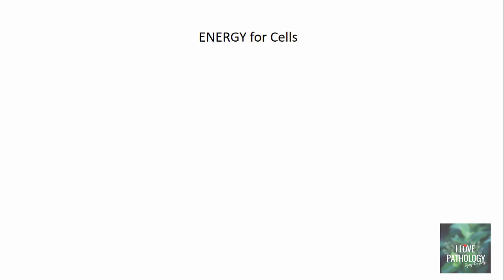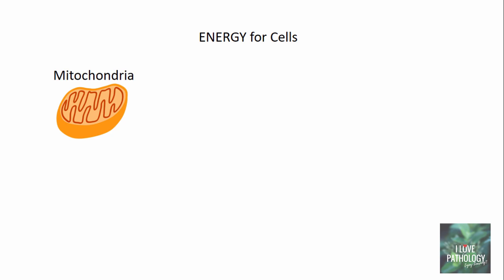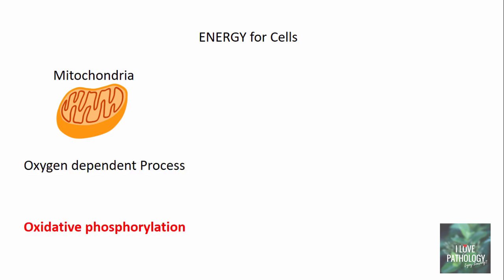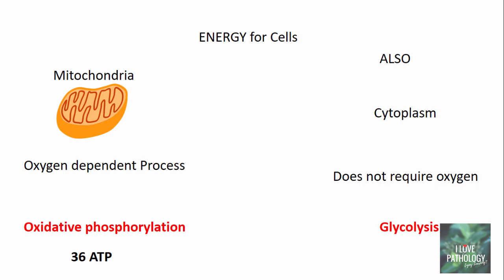Moving on to some basics in metabolism. Every cell needs energy. This energy is derived within the mitochondria by an oxygen-dependent process called oxidative phosphorylation, where 36 molecules of ATP are generated. This also happens in the cytoplasm by a process called glycolysis, which does not require any oxygen, and only two molecules of ATP are generated.